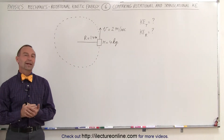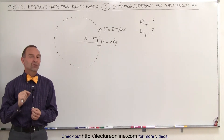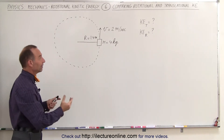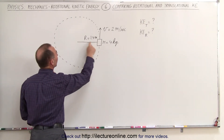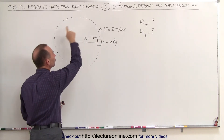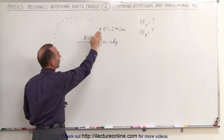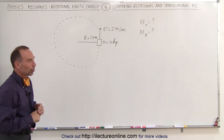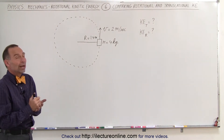Welcome to Electronline. In this video we're going to do an interesting comparison. We're taking an object, basically a point mass, which is attached to a string of length 1.4 meters and it's rotated in a circular path. The velocity of the object is 2 meters per second. We're going to calculate the kinetic energy in two ways.